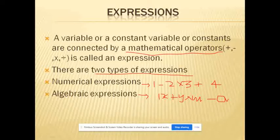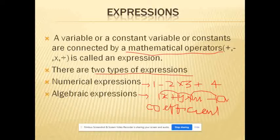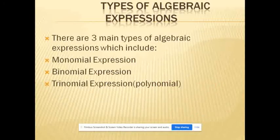From the second example for algebraic expressions, we have 1X, 1Y, 1M, 1A. The value 1 in front of the variables is called the coefficient. The numerical value of the term is called the coefficient.